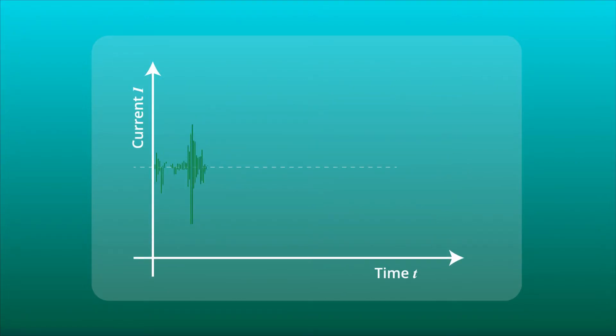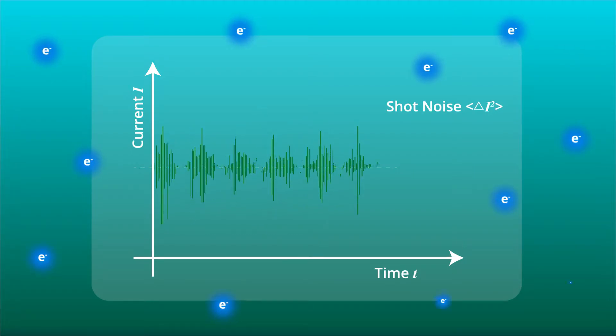One way to do that is by measuring shot noise, a noise originating from the discrete nature of electrons.